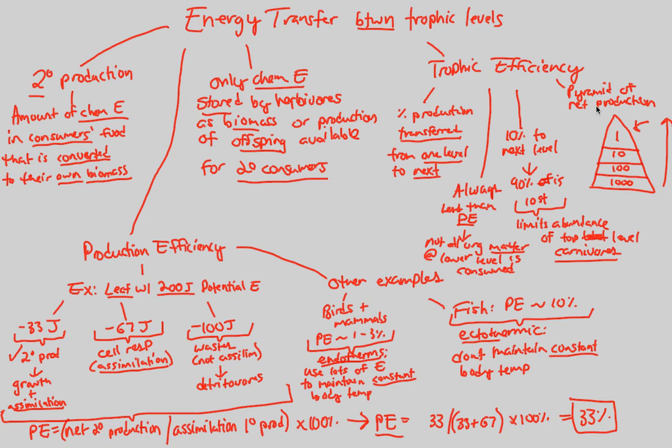This is because of this trophic efficiency, this rule of ten that we see as we move up or down, whichever way you want to look at this pyramid of net production. The more you go up, the less energy you have available because that's just how energy works on the trophic scale, on the ecosystem scale.